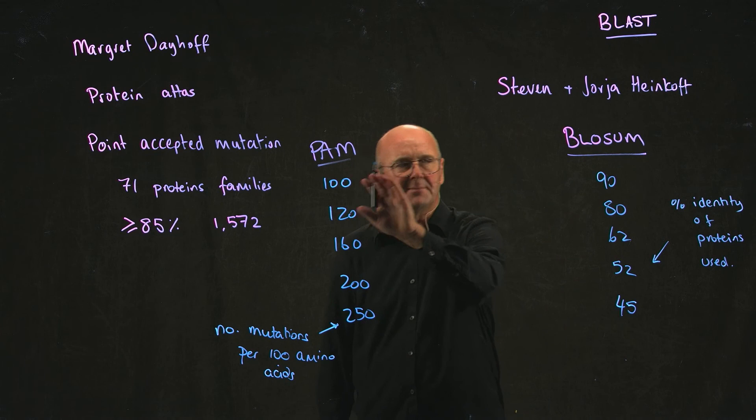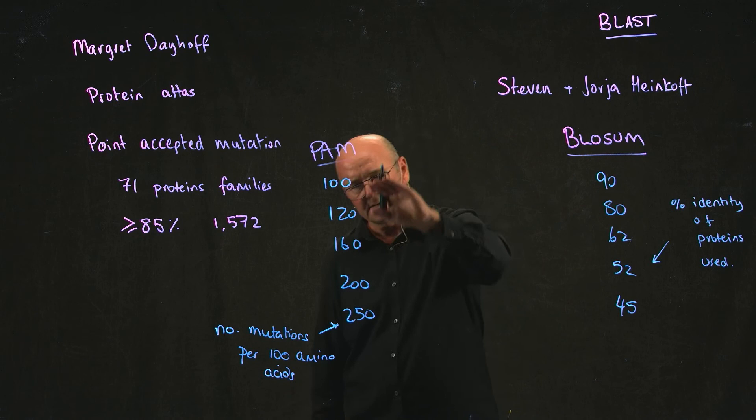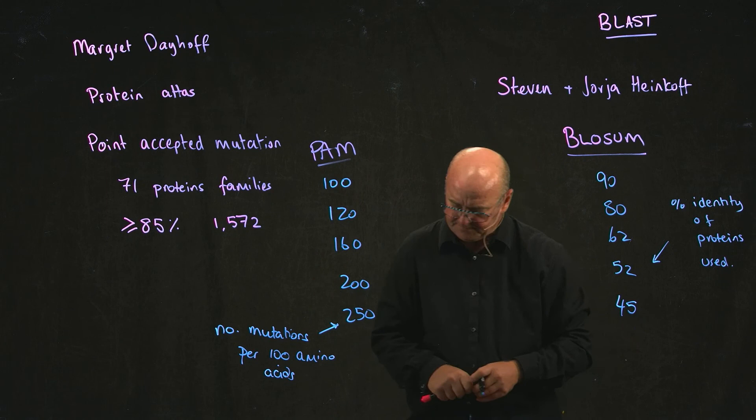And these two numbers are sort of like Pam 100, approximately Blossom 90. Not really, but kind of. So as this number increases, as this number decreases, you're getting more divergent proteins.